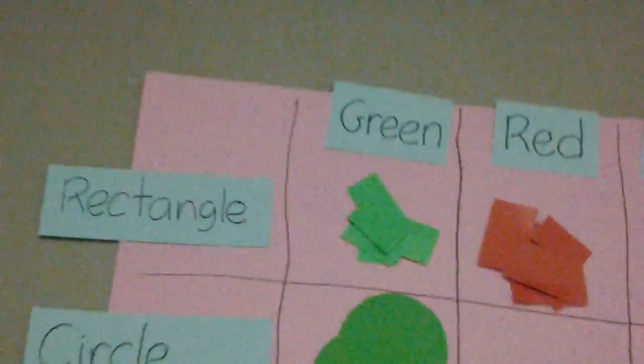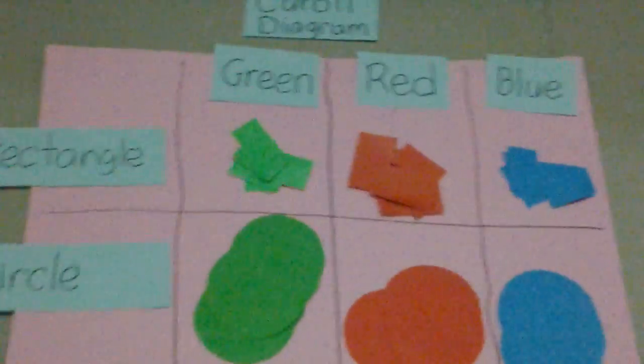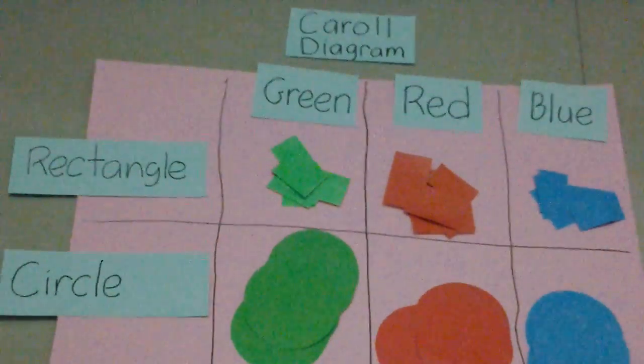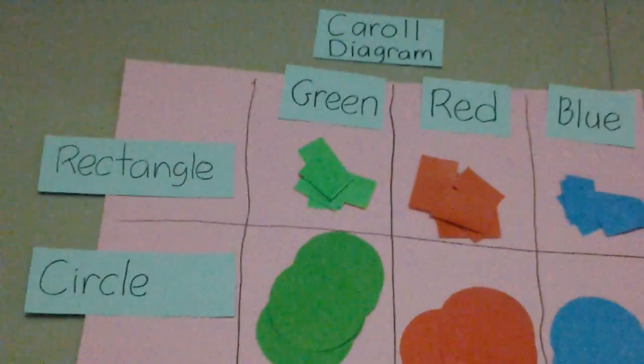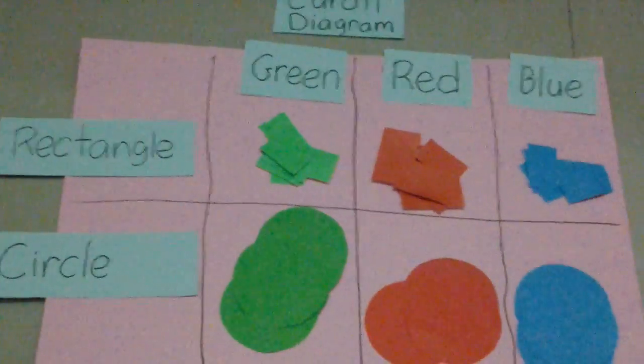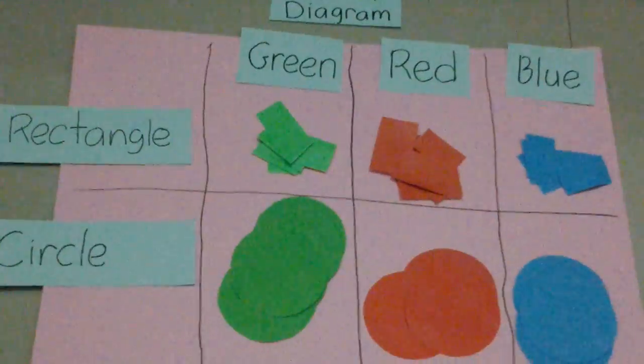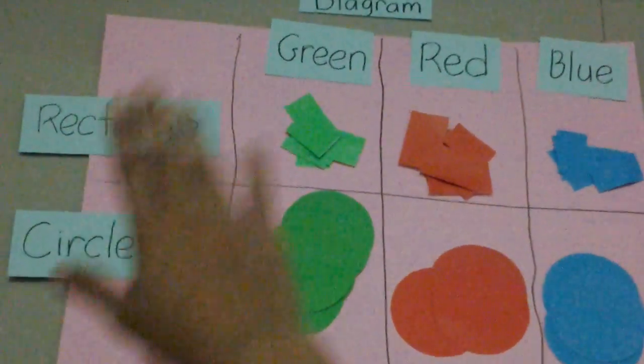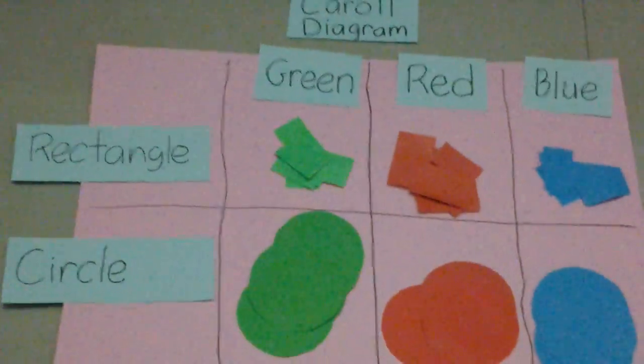Now we got the data in our Carroll diagram. Like this. So from the things that we did together, basically it's only just to sort out the things or the data that we have into certain categories.